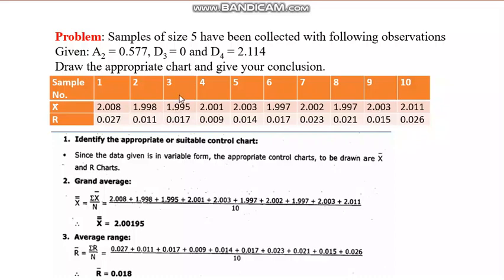There are 10 samples, each of size five. X-bar and R values have been calculated and given. Which chart should be used? Since the data shows decimal values, these are variable data — not attribute data. Attribute data would have whole numbers. So we use variable control charts: X-bar chart and R chart.